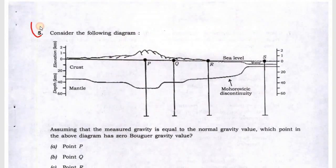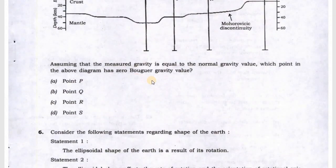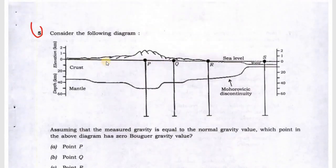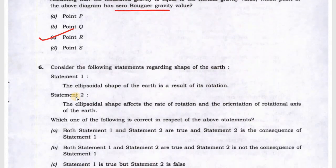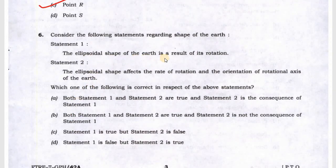Question 5: they are asking where is the zero Bouguer gravity value. You know that Bouguer gravity in mountain regions is negative. You can see point P is mountain region, Q is also mountain, and the R region is the plain. So this will be zero, so point R will be the answer. Next is the ellipsoidal shape of the earth is a result of its rotation. This is the correct statement and the ellipsoidal shape affects the rate of rotation and the principle of the rotational axis of the earth. Both statements are correct, so option A will be correct, and the second statement is the consequence of the first statement.